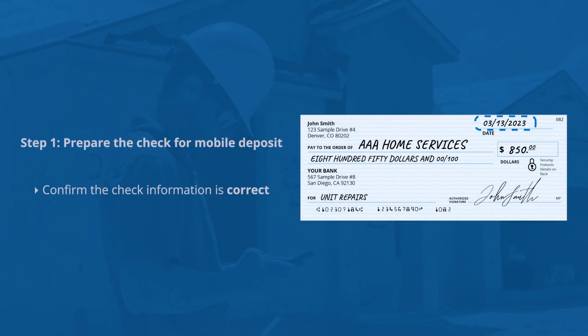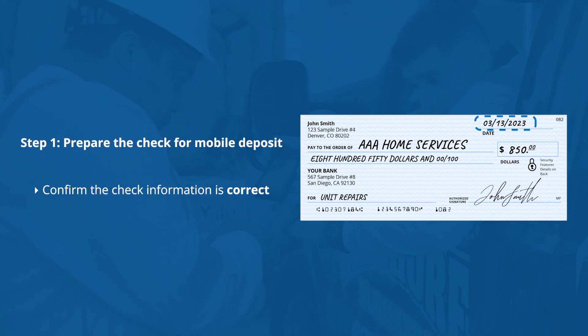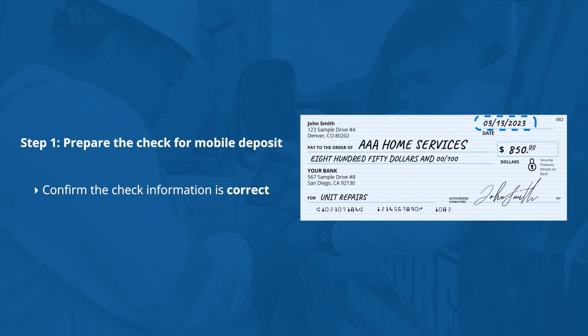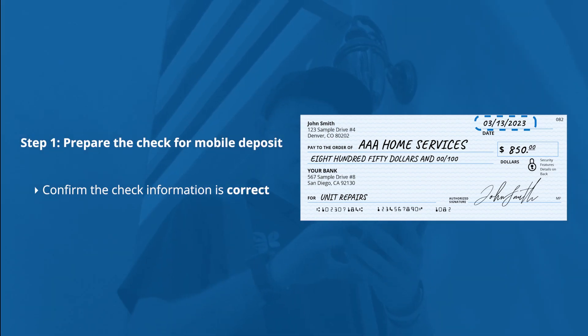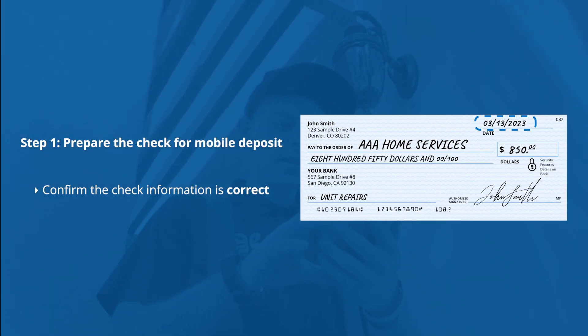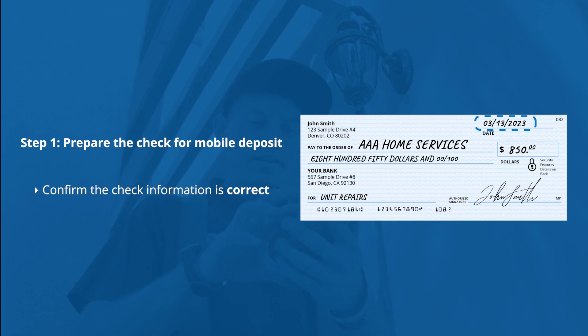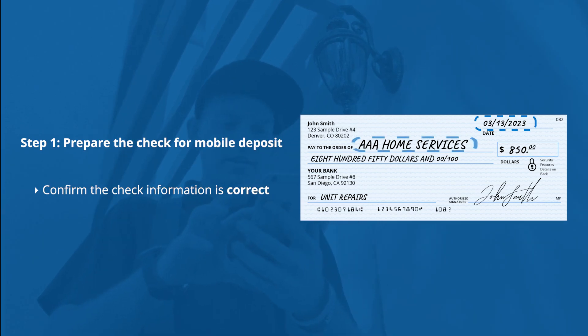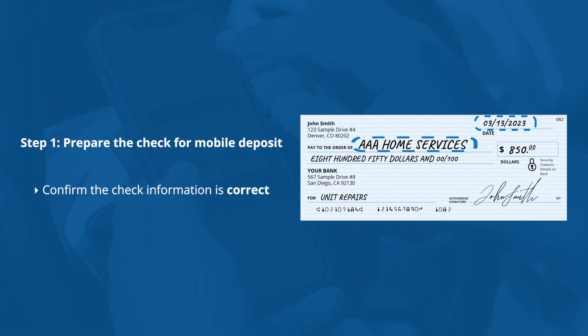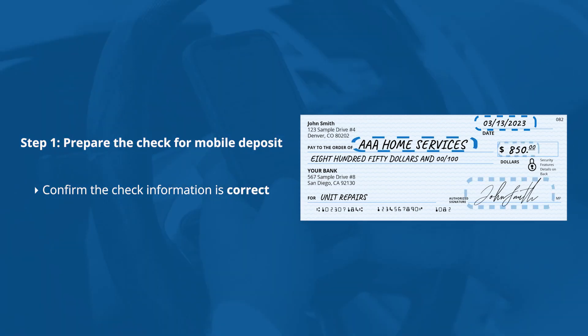The first step is to verify the information is correct. On the front side of the check, you'll want to verify the date and pay name are printed out. Be sure to have the customer verify all information is correct before moving through the process.